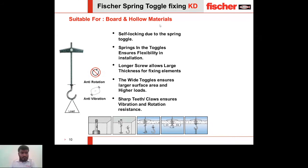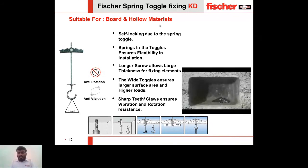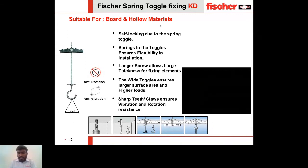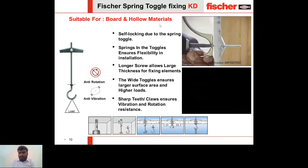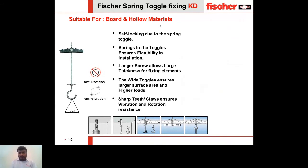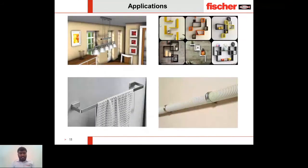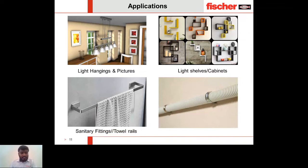Here is a short video showing how the anchor is installed in hollow block materials. The KD and KDH anchors can be used for light hangings and pictures, kitchen shelves and cabinets, towel rails and sanitary fixings, and cable and pipe clips. These are typical applications, though the anchor serves many more.